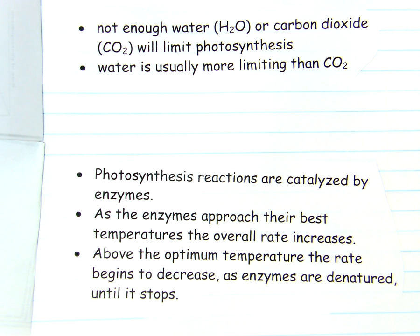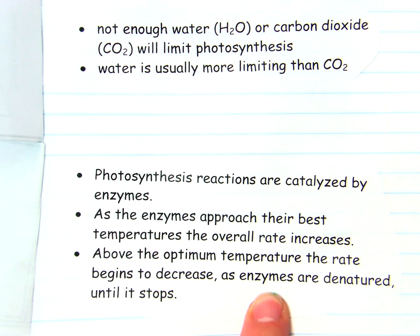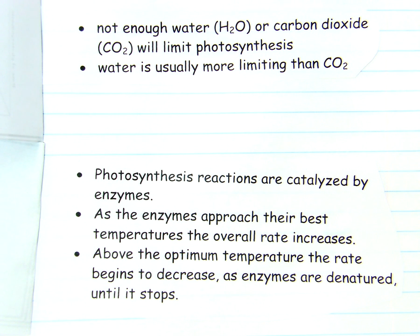So when our grass and lawns turn brown during the summertime, there are two reasons: one is not enough water, and the other is that especially on those really hot days during the summer where we get temperatures up over 100, the enzymes in the plants are being denatured and can't work. That is it for our notes today.